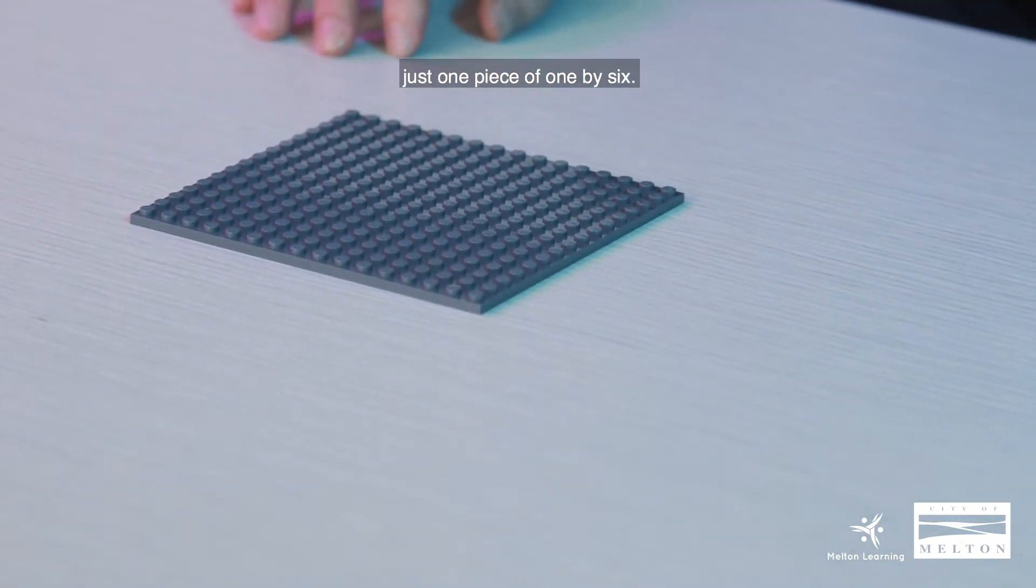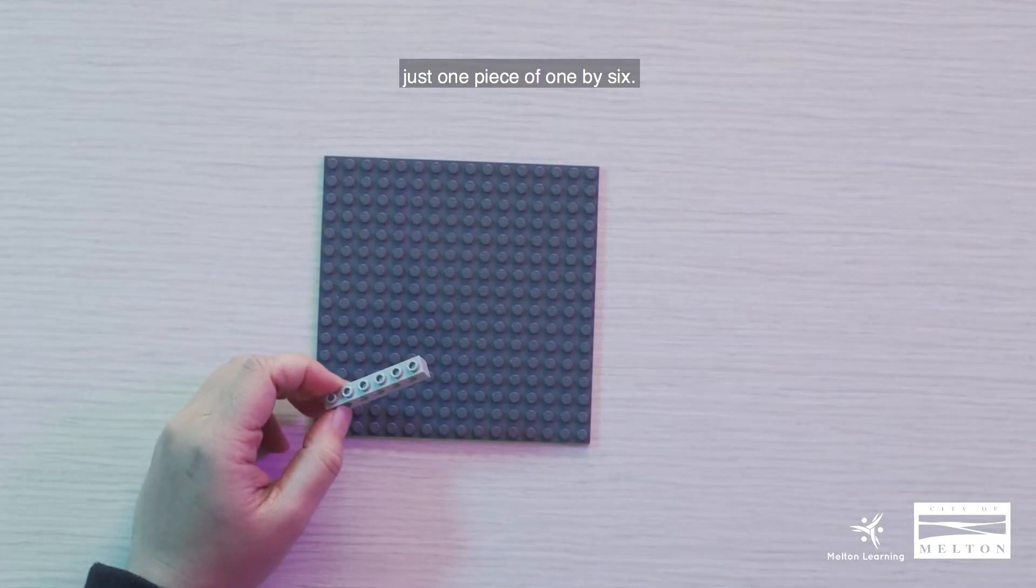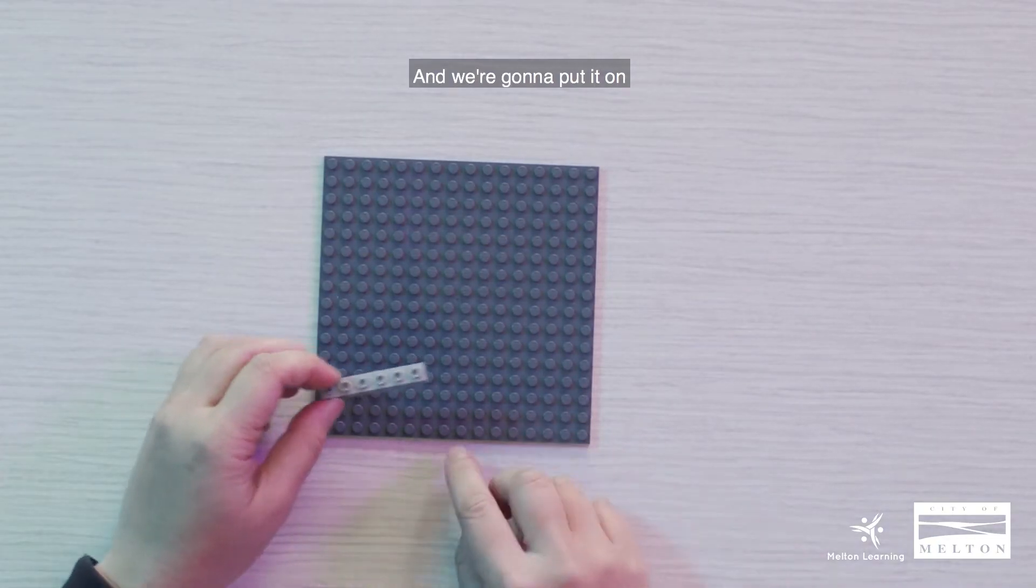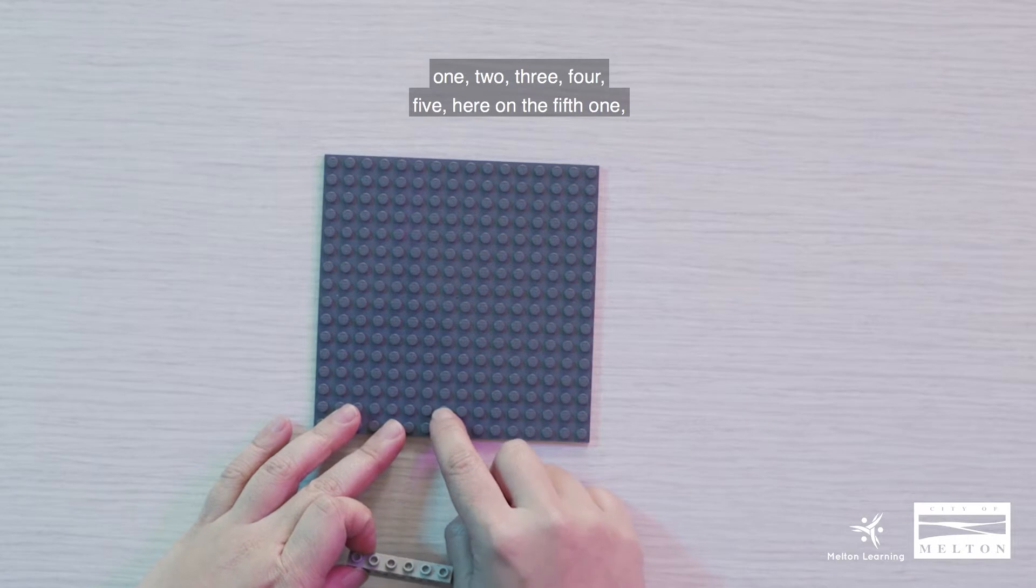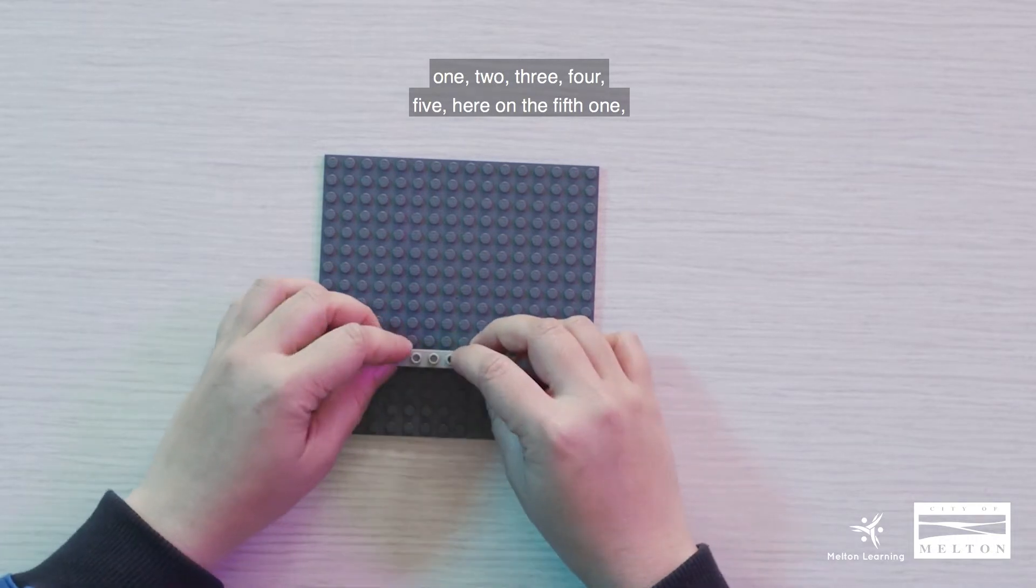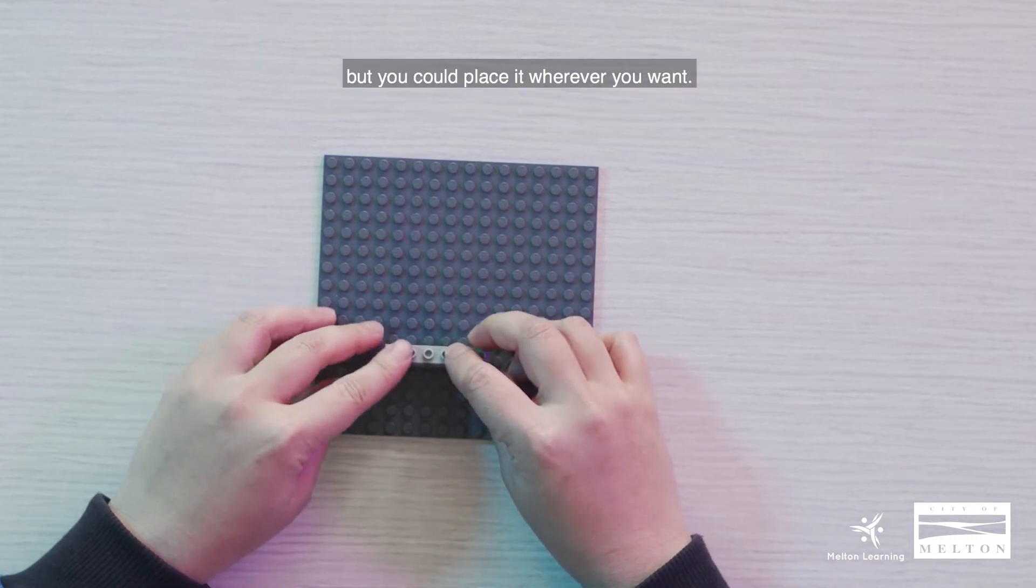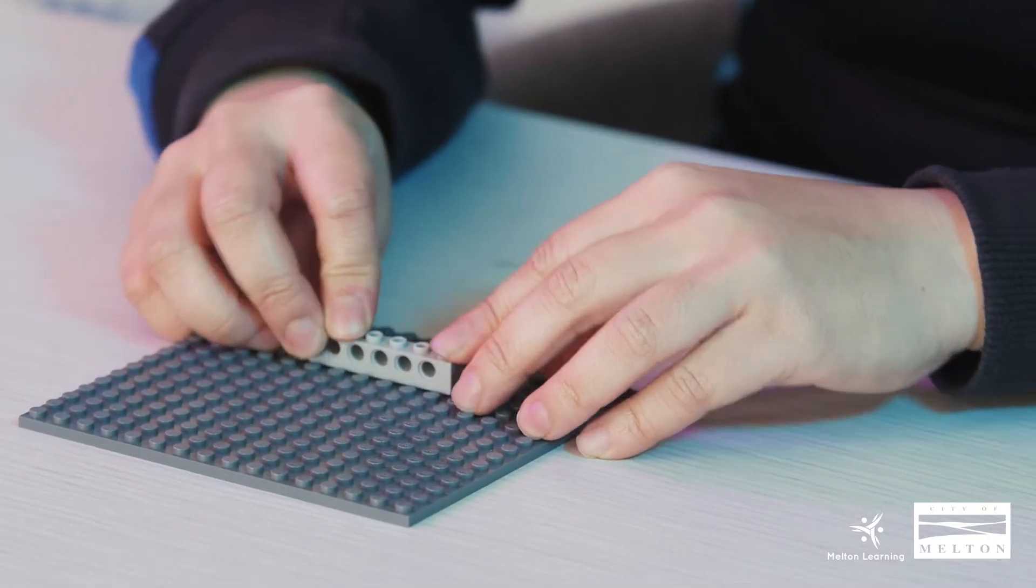So we'll need just one by six, just one piece of one by six and we're going to put it on one, two, three, four, five here on the fifth one but you could place it wherever you want like that.